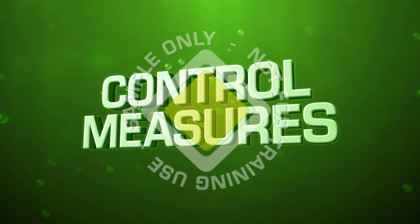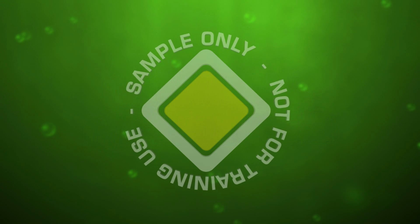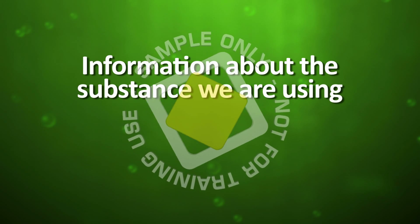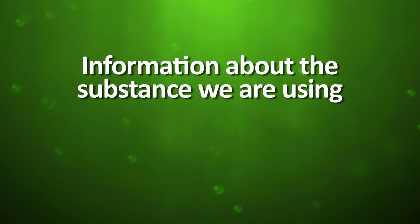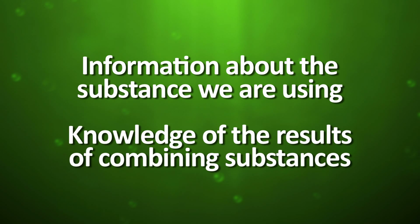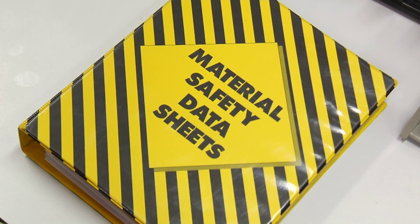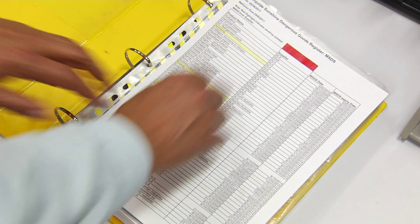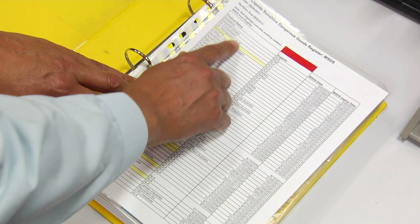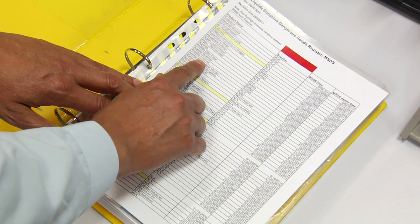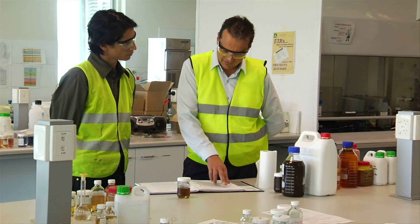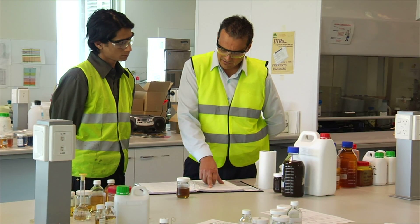Before implementing control measures, we need to have information about the particular substance we are using and to know what happens when we combine one or more substances. The starting point for this is combining information such as material safety data sheets with the experience of trained personnel in the workplace.